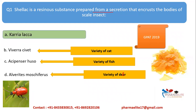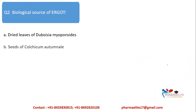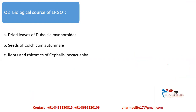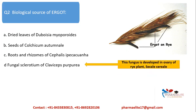Next question: the biological source of ergot. The options are: dried leaves of Duboisia myoporoides, seeds of Colchicum autumnale, roots and rhizomes of Cephaelis ipecacuanha, and fungal sclerotium of Claviceps purpurea. Ergot grows on rye — it develops inside the ovary of the rye plant and is basically a fungal growth. So it cannot be a leaf, seed, or root. The correct answer is option D: fungal sclerotium of Claviceps purpurea.